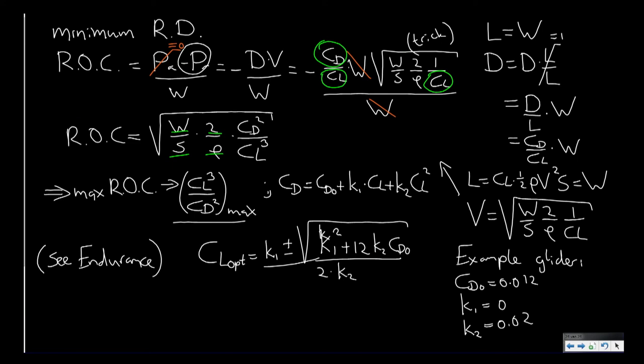So if we take all these values and we insert them into this equation for the optimum CL, we actually find that CL is equal to 1.34.